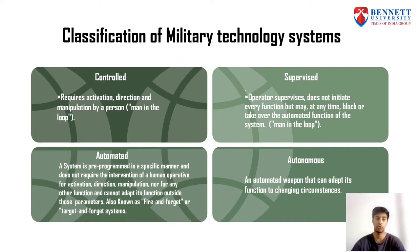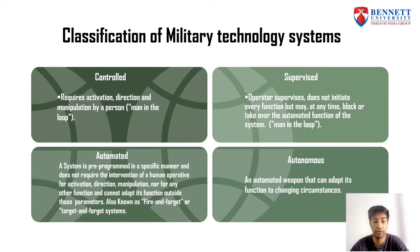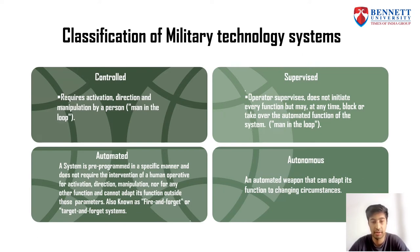For example, using an autopilot in an airplane, where the pilot can take control of the flight at any time. An Automated system is pre-programmed in a specific manner and does not require the intervention of a human operative for activation, direction, or manipulation, nor any other function, but it cannot adapt outside these parameters. This type of system is also known as a fire-and-forget or target-and-forget system. For example, self-driving cars.